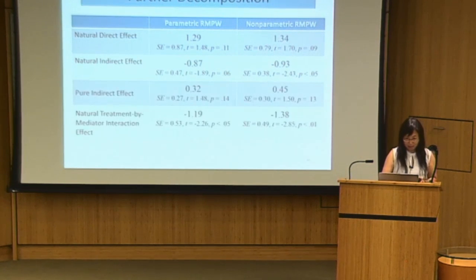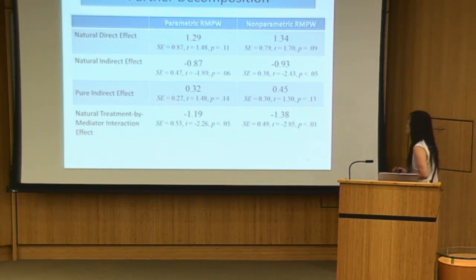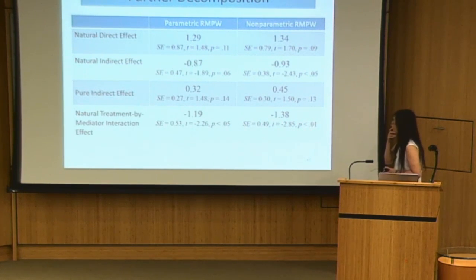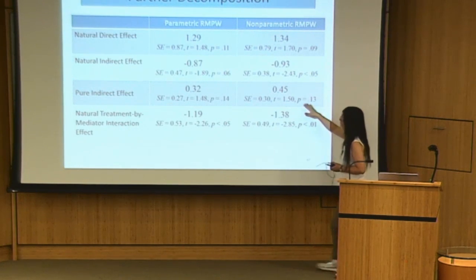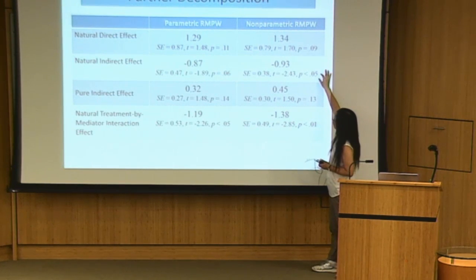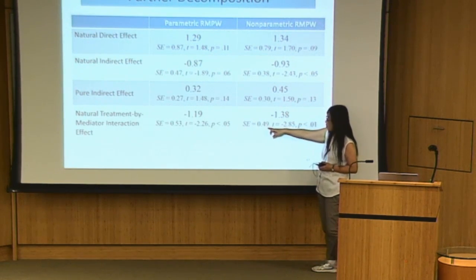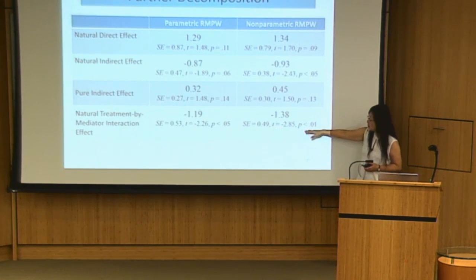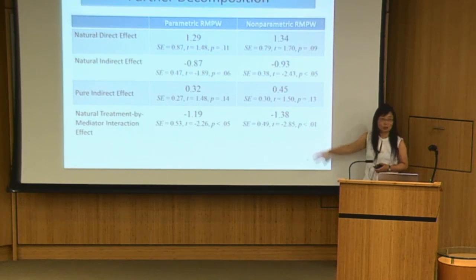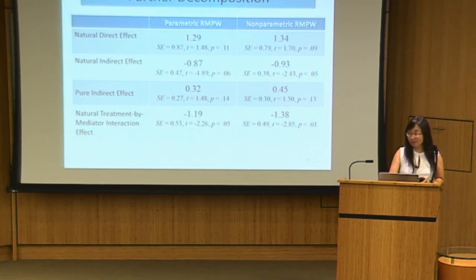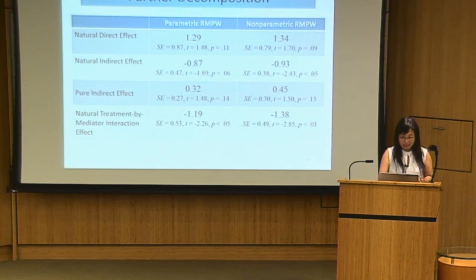Looking at the full set of non-parametric results and comparing with parametric results, the indirect effect now becomes truly statistically significant, with a slightly larger point estimate and slightly smaller standard error. This increases confidence that the treatment-by-mediator interaction effect is significant, and the interpretation remains the same as before.